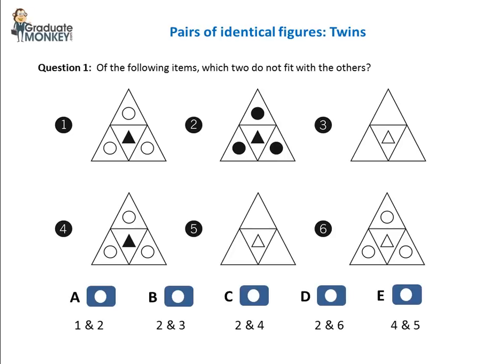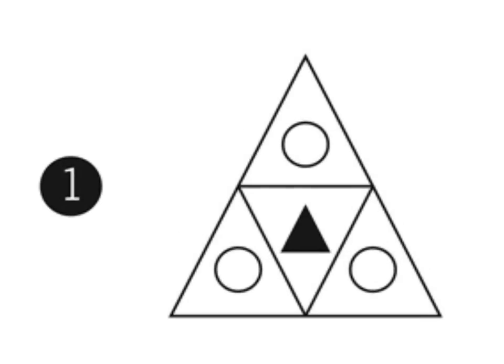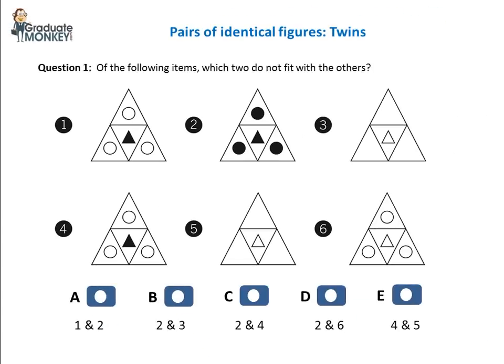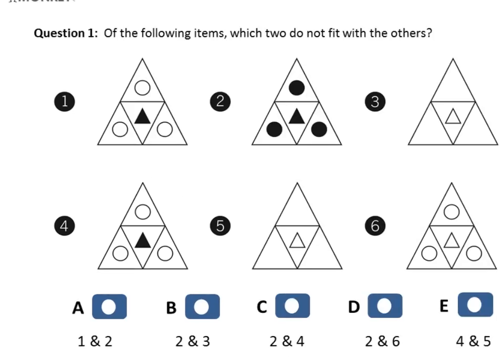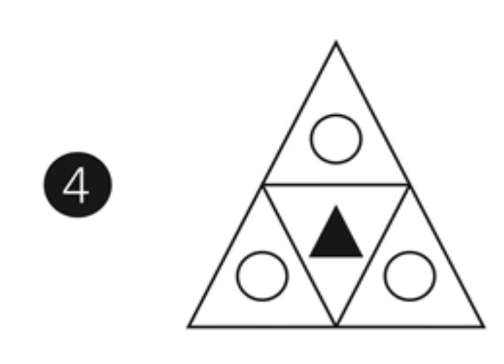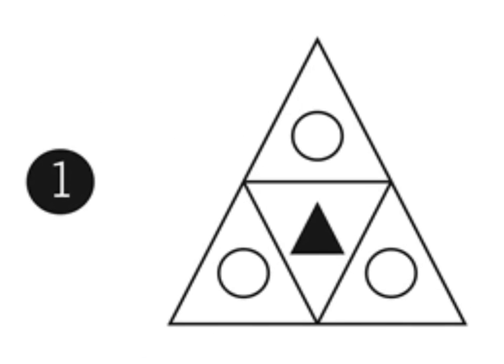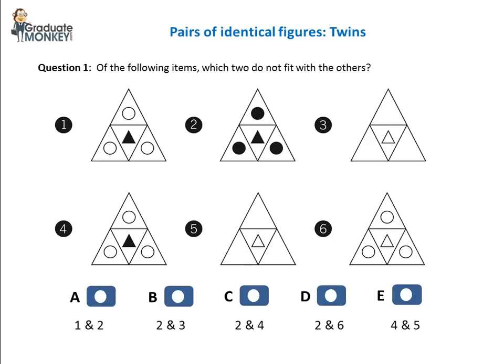There are six larger triangles that contain some smaller shapes and figures. Figure 1 contains three smaller circles and two smaller triangles, one of which is shaded. When we scan the other figures more closely, we notice that figure 4 looks identical to figure 1. Thus, we have identified the first pair of identical figures.